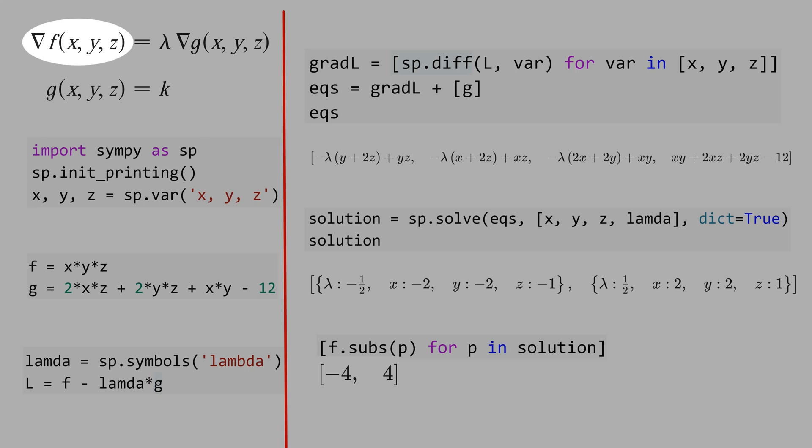We have to solve the system of equations, that is the gradient of f equal lambda times the gradient of g. And first we declare L equal f minus lambda, that is the Lagrange multiplier, times g.